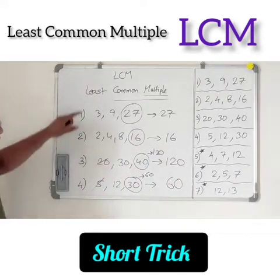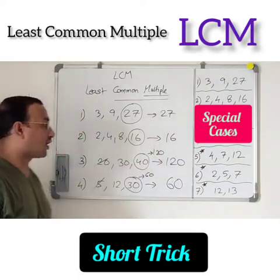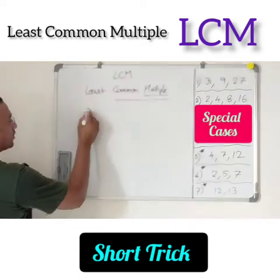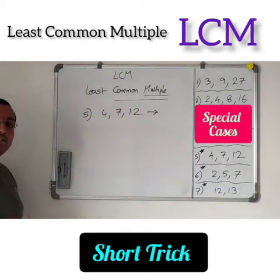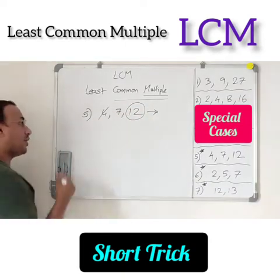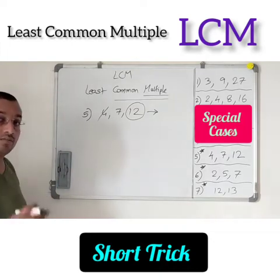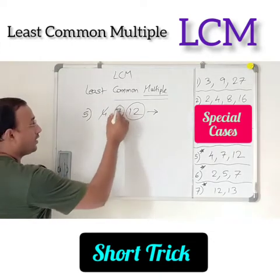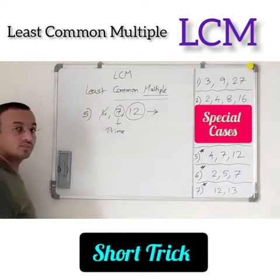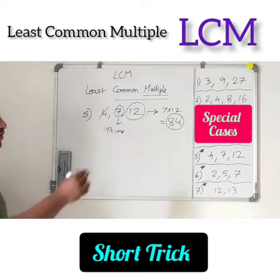In this way, we can find the LCM of the numbers. Now let us try examples 5, 6, and 7, which are special cases. For the fifth one: 4, 7, and 12. The largest number is 12. Is it divisible by 4? Yes — cancel it. Is it divisible by 7? No. But observe — 7 is a prime number. When one of the numbers is prime, just multiply 7 by 12. 7 × 12 = 84. Therefore, the LCM is 84. This is the special case.